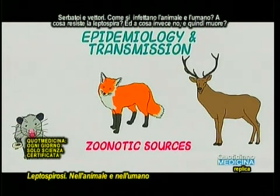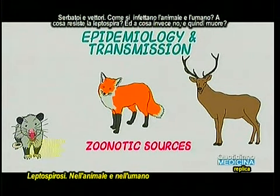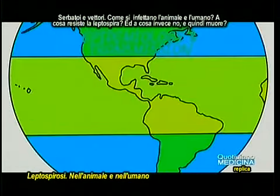La leptospirosi è una malattia infettiva che può colpire una grande varietà di animali, sia mammiferi domestici che selvatici. È stata riscontrata anche nei leoni marini. I principali serbatoi in Europa sono i roditori, mentre negli Stati Uniti i principali serbatoi e fonti di contagio negli esseri umani sono i cani.